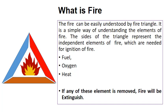Each individual side of the triangle represents an independent element of fire which is required to ignite or continue a fire. These three basic elements are: the first element is fuel, the second element is oxygen, and the third element is heat. In case of absence of any of these elements, fire will stop or it cannot be ignited.